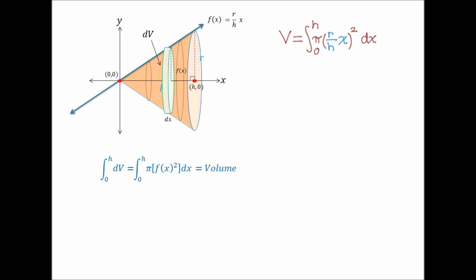We distribute the square, and we pull out the constants, and then we get πr²/h² times the integral from 0 to h of x²dx.